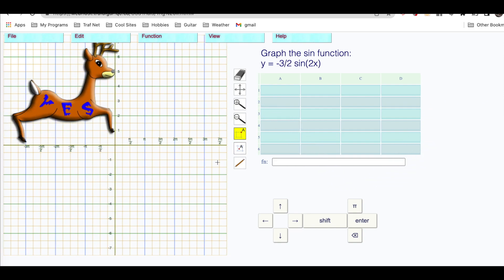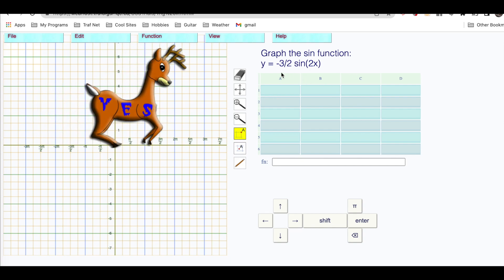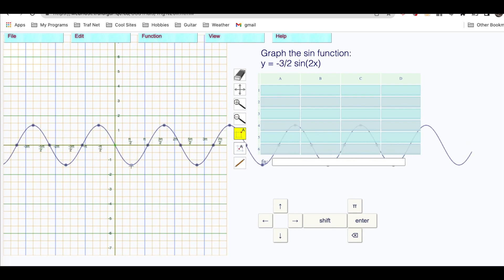Graph the function y equals negative three over two sine of two x. A is negative three over two, that's negative 1.5. Drag that down to 1.5. And the b is two. Take the reciprocal of that, one half pi. This point should be going through one half pi, which is right here.